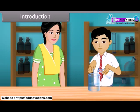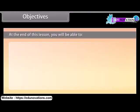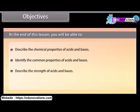Children, in this lesson we will learn about the chemical properties of acids and bases and about salts. At the end of this lesson, you will be able to: describe the chemical properties of acids and bases, identify the common properties of acids and bases, describe the strength of acids and bases, and explain salts.